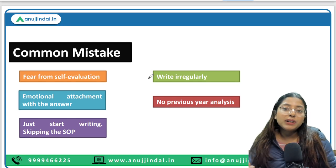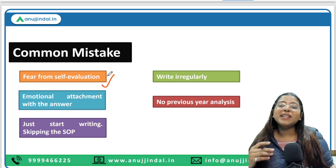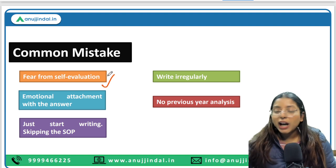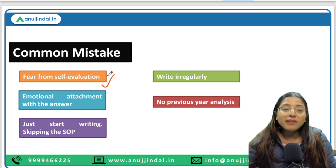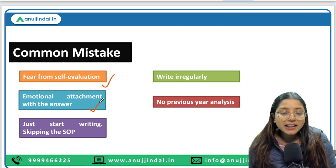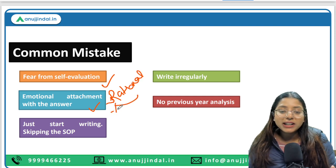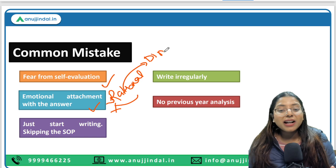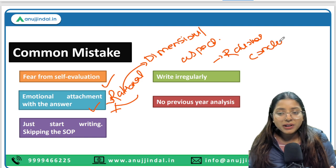Let's talk about the common mistakes we all make while writing answers. First, fear from self-evaluation — we will never fear; we will evaluate ourselves. Second, emotional attachment with the answer — instead, we are going to follow a rational approach. We will not be emotionally attached; in a rational approach we will include all dimensions and aspects and give a rational conclusion — a way forward in the form of conclusion.